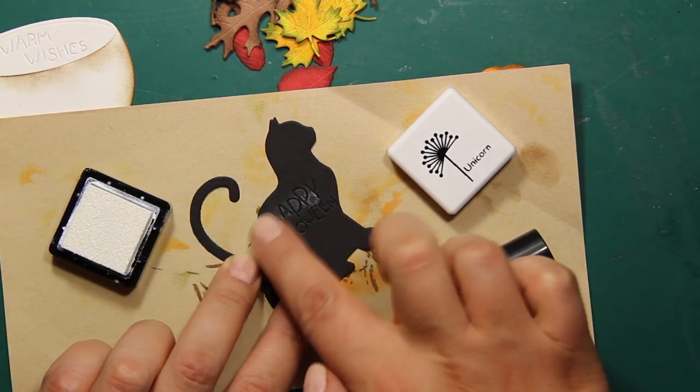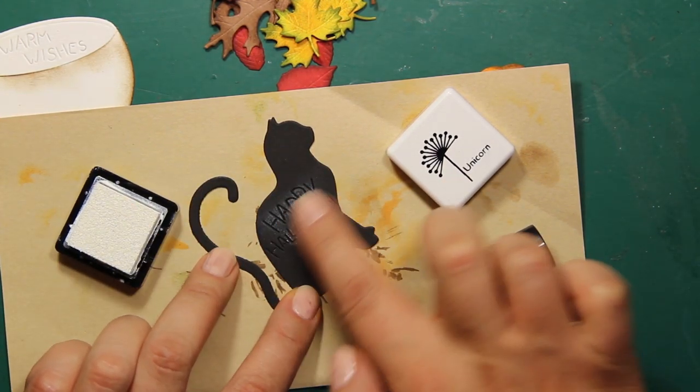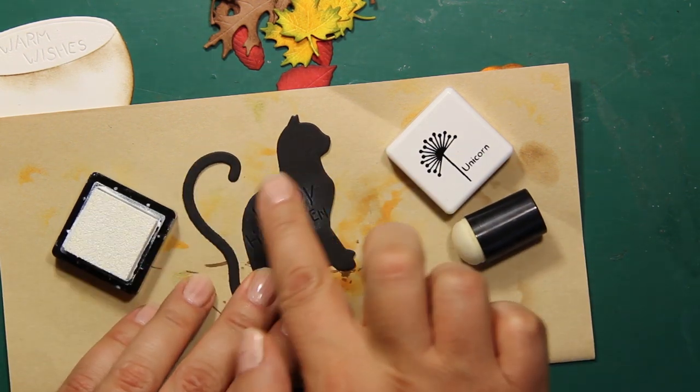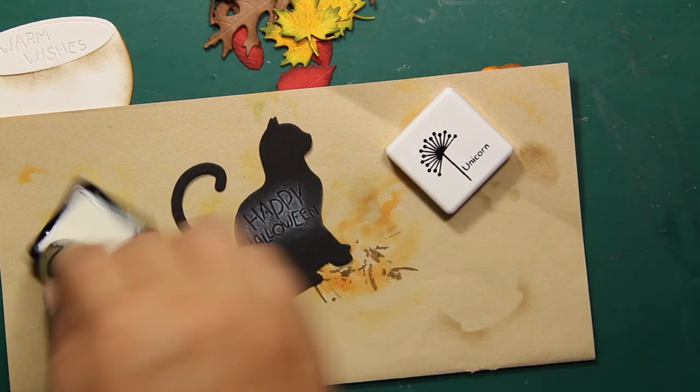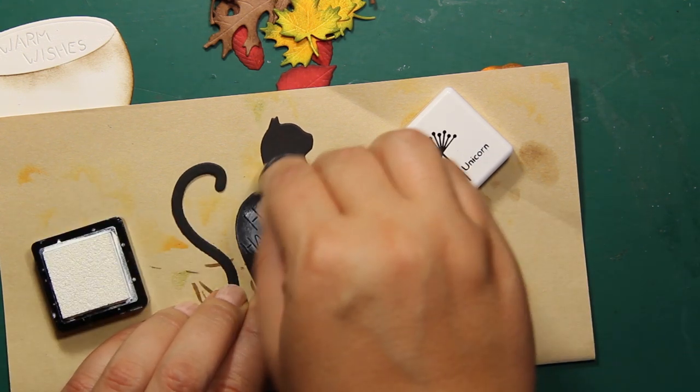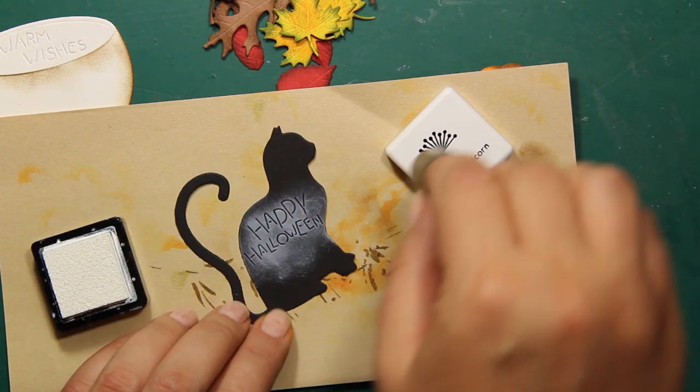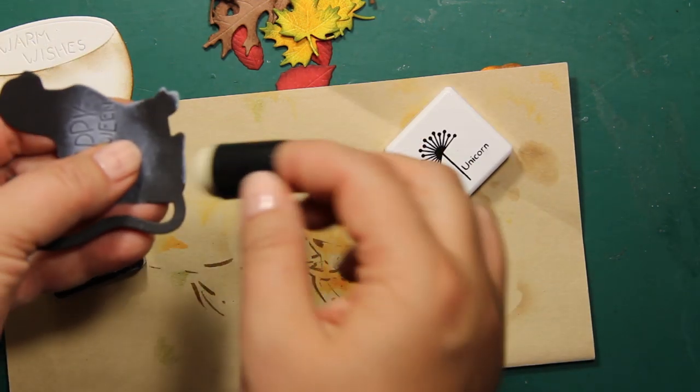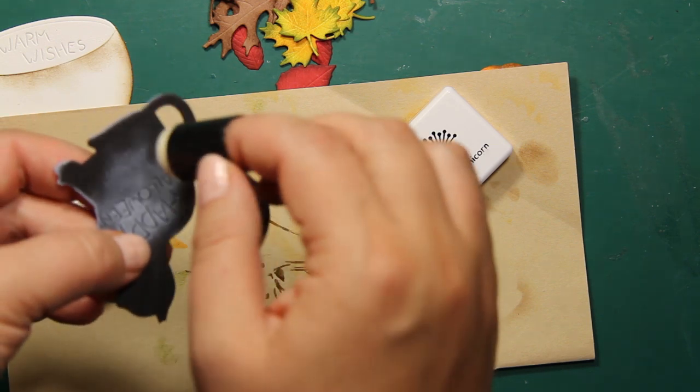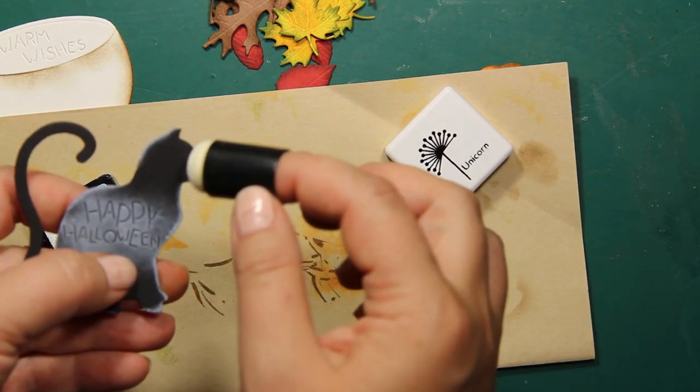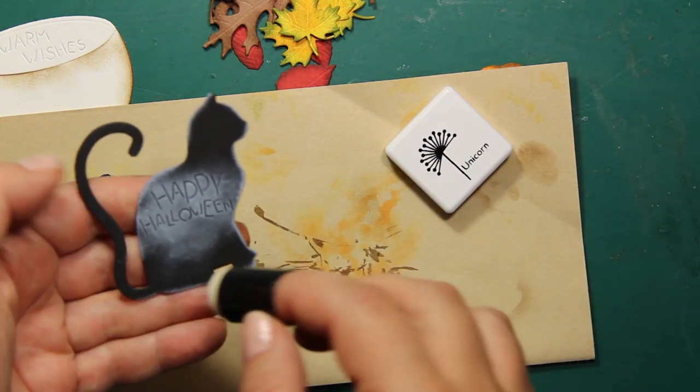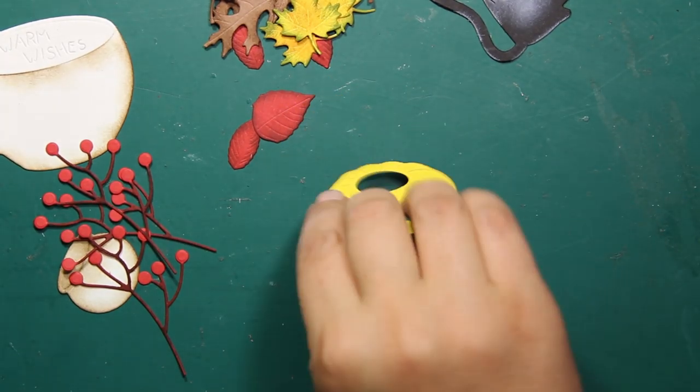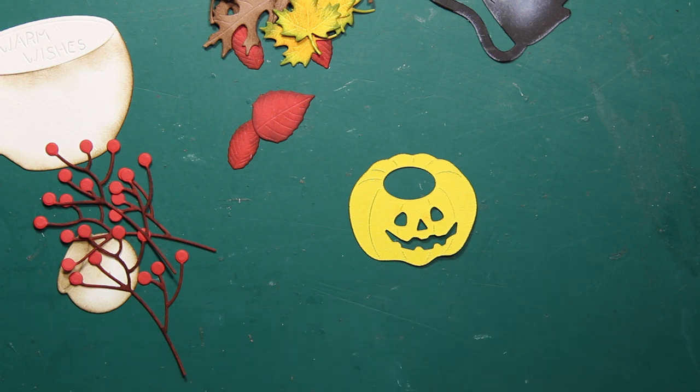I've die cut it out of black cardstock, so the Happy Halloween sentiment that it has is not really visible. But if you apply some white pigment ink on top, it really helps the sentiment to stand out. Besides, it creates that chalkboard look that I like. I'm also applying a little bit of white ink all around the edges. Now I am done with the inking.